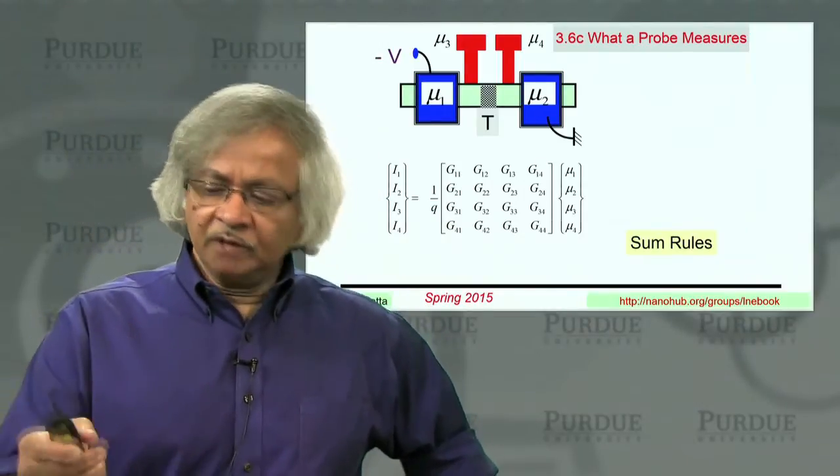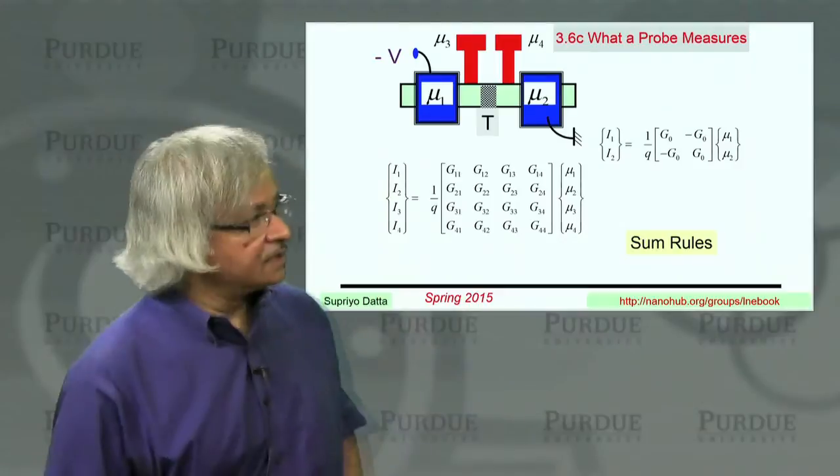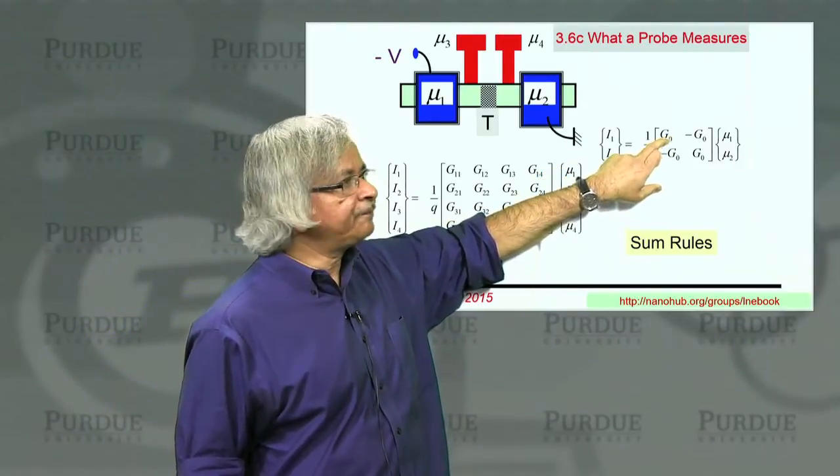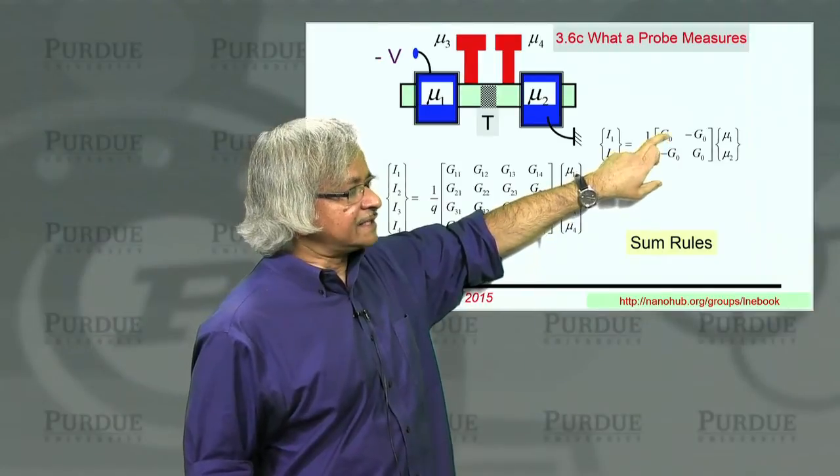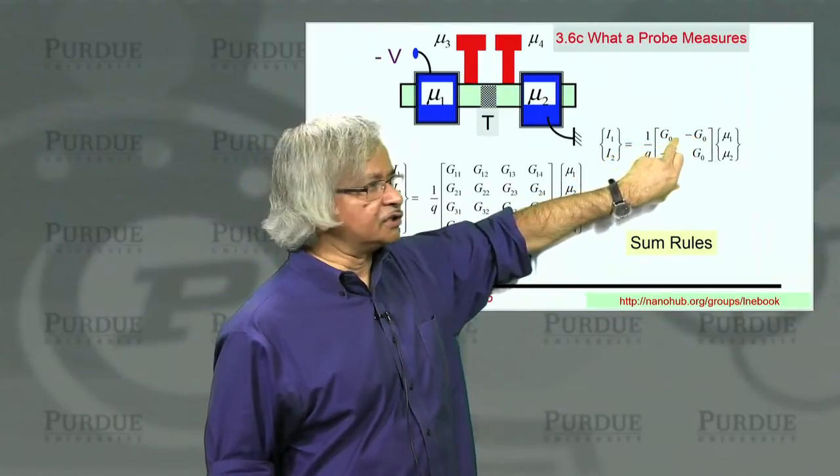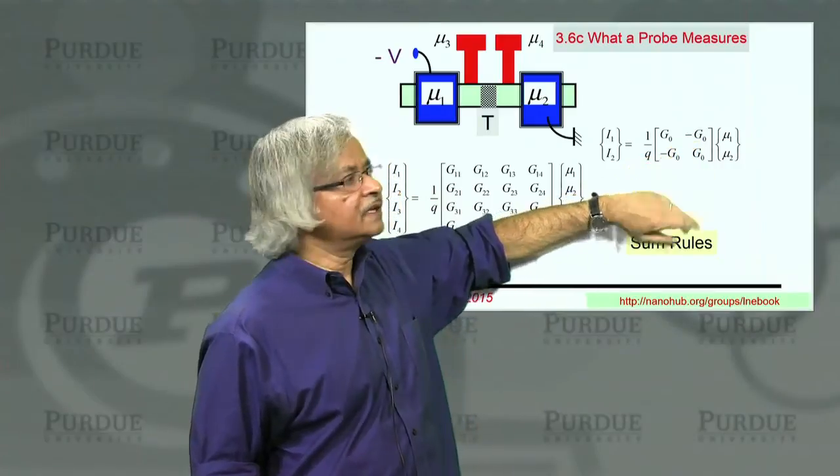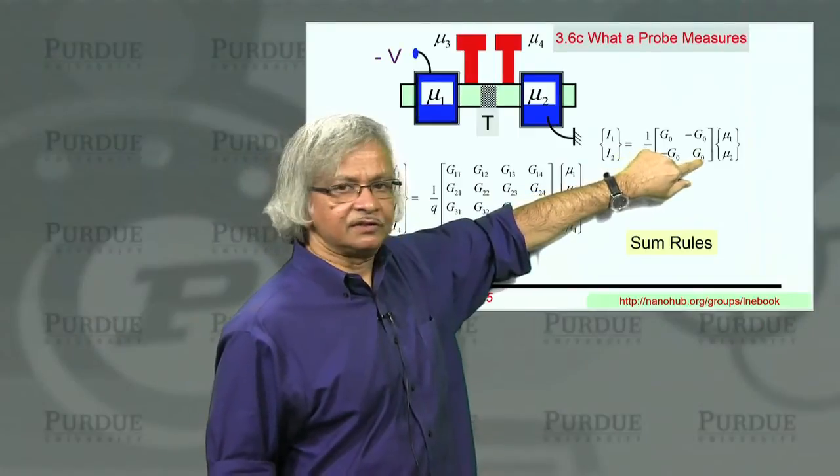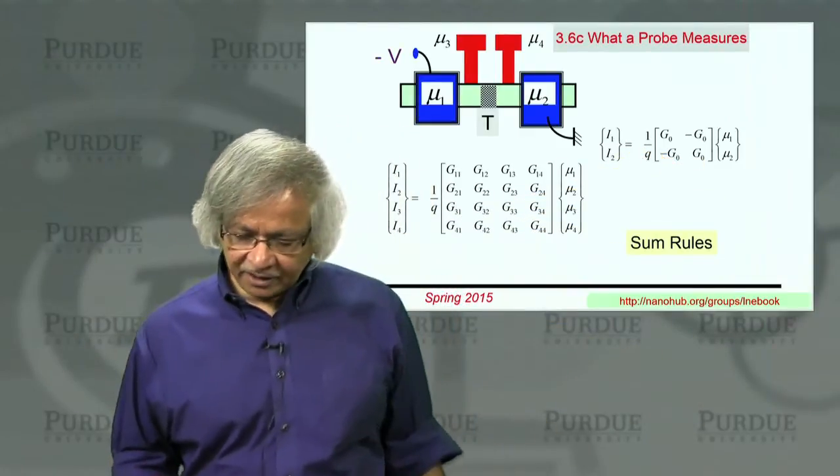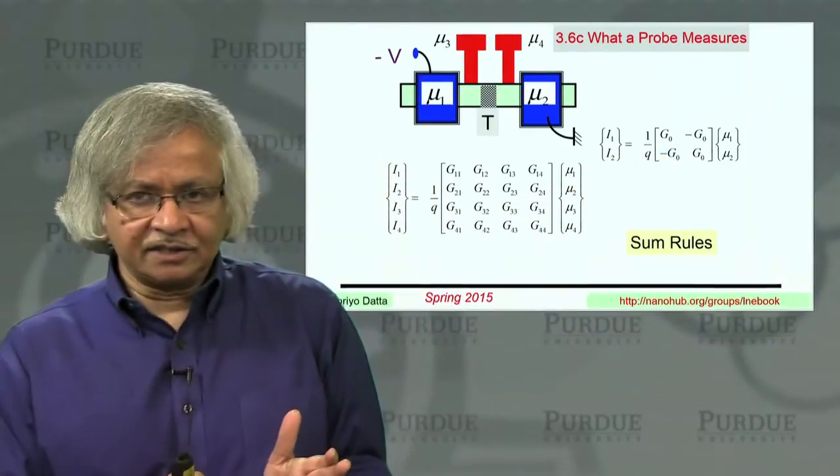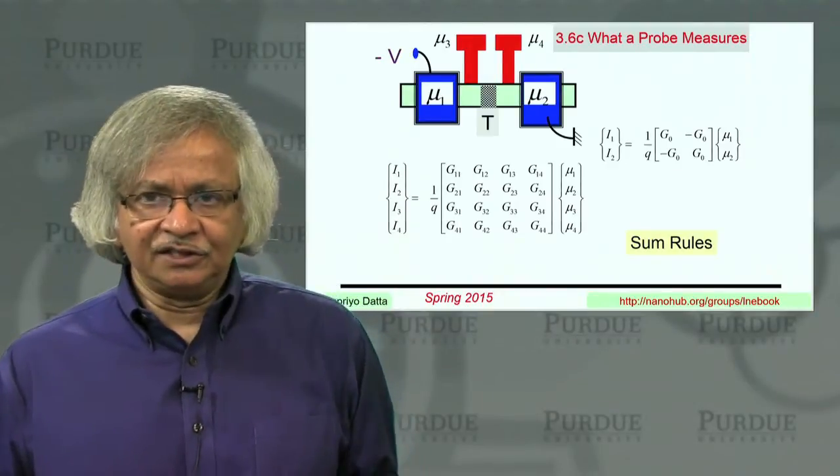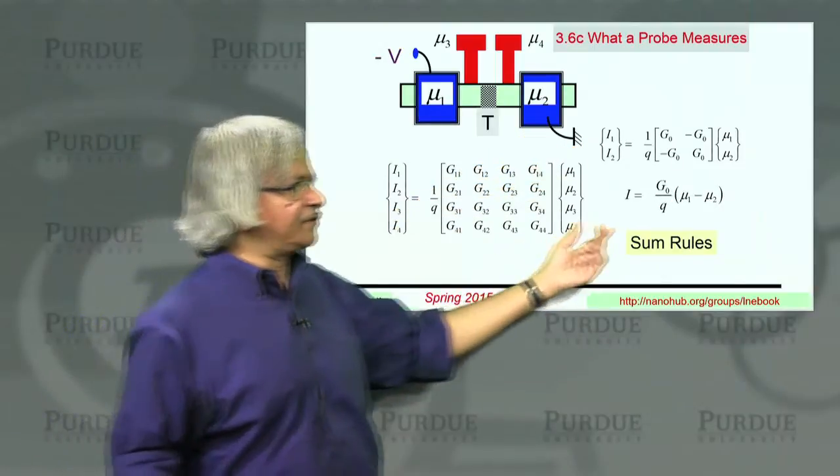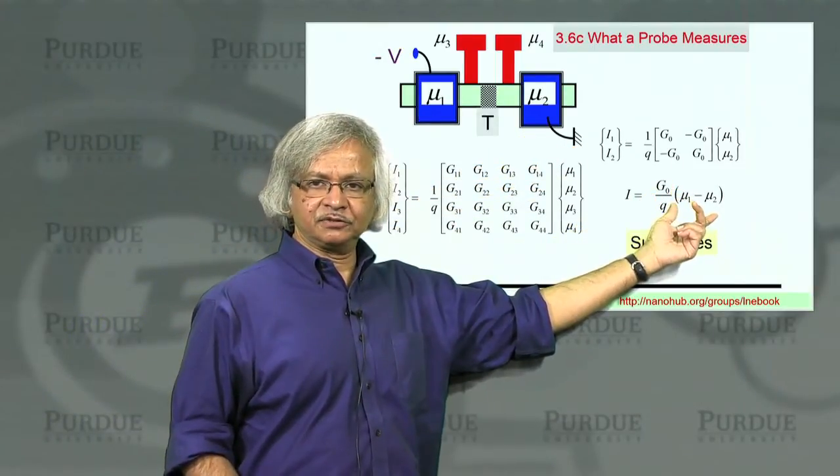Now, if you had a two-terminal device, what that means is, that when you have a two-terminal device, let's say that's your conductance g0, then the sum rule requires that that must be minus g0, because the two must add up to 0. Similarly, the sum rule requires that must be minus g0, and that must be g0. So when you have a two-terminal device, it's not like you have four conductance elements. You really have just one, g0, which is why normally we don't even bother to write that matrix. We just write I equals g0 times mu1 minus mu2.